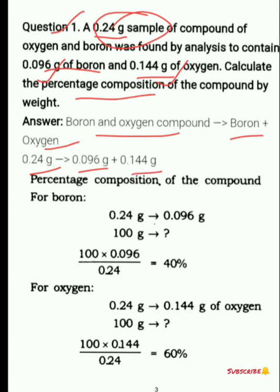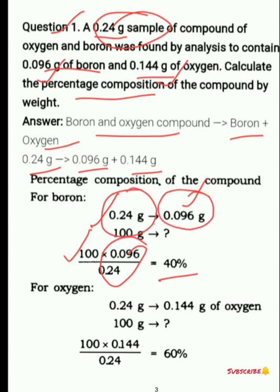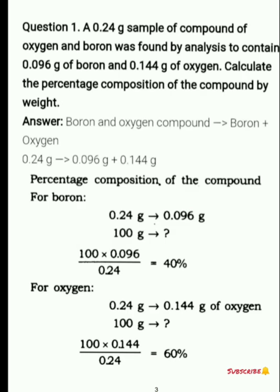You have 0.144 gram of oxygen. What do you need to find? The percentage of each element. You know that in 0.24 gram of sample, boron is 0.096 gram. So you divide and multiply by 100 — that gives 40%. For oxygen, you do the same with the total weight of the sample, and you will get the percentage, that is 60%.